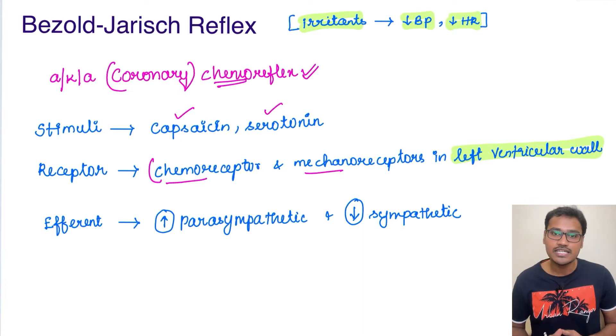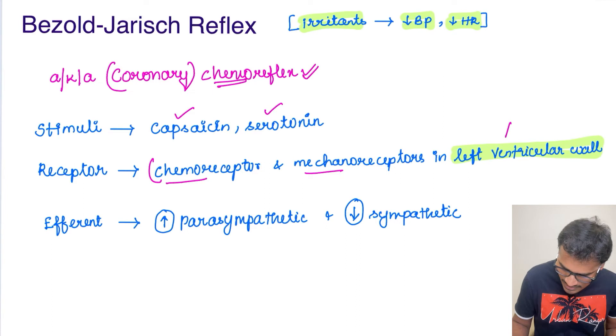But Bezold-Jarisch reflex is due to the receptors which are present in the left ventricular wall. This is very, very important.